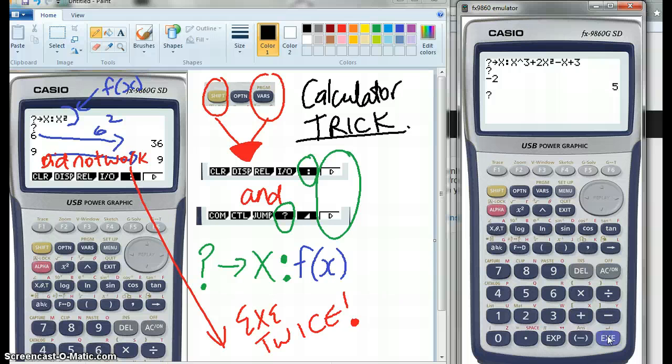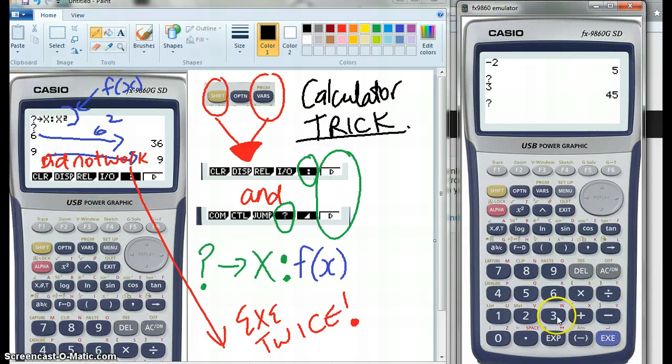Execute to get the question mark back. We could put 0 in it. Get our 3. Execute again for the question mark. And 55, for example.